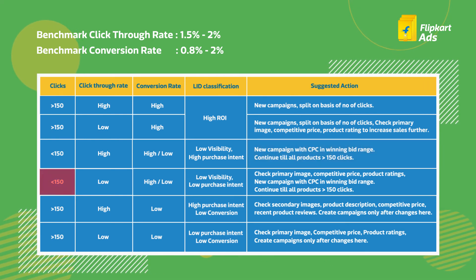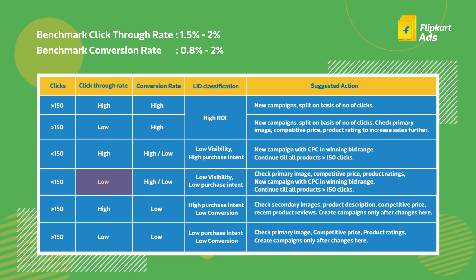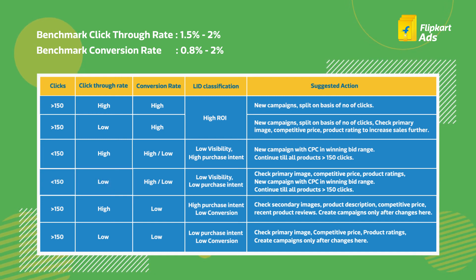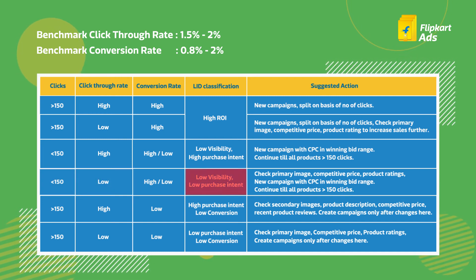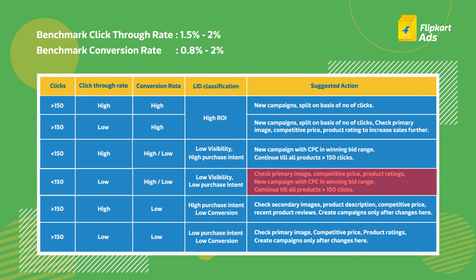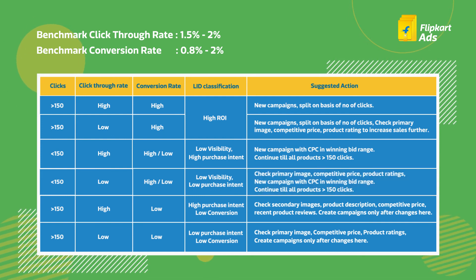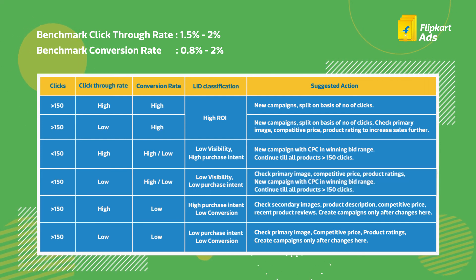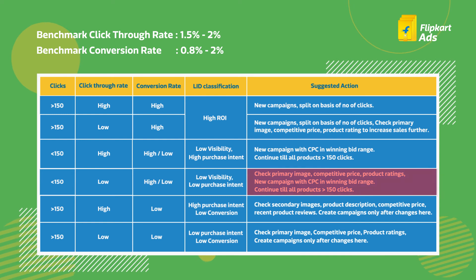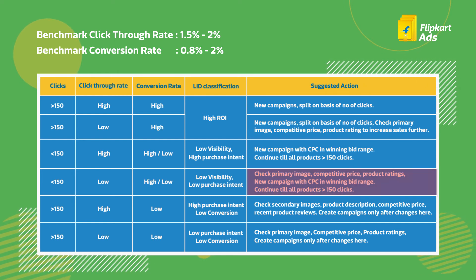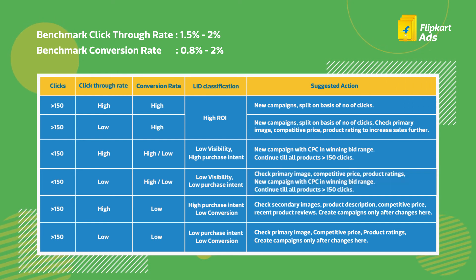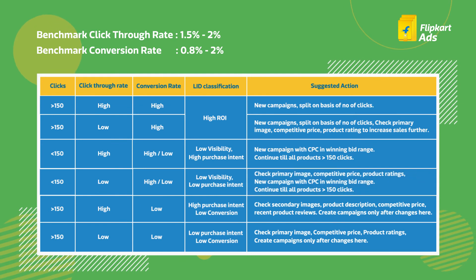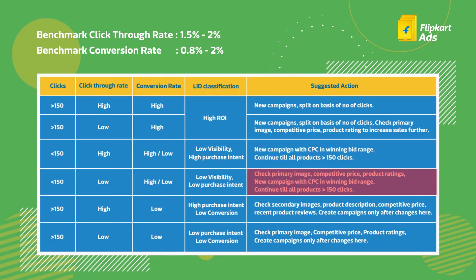Listings with less than 150 clicks and low click-through rate — these are your low visibility but low purchase intent listings. Check primary image, competitive price, and product ratings. Create a new campaign with CPC in the winning bid range and continue until all products receive greater than 150 clicks.